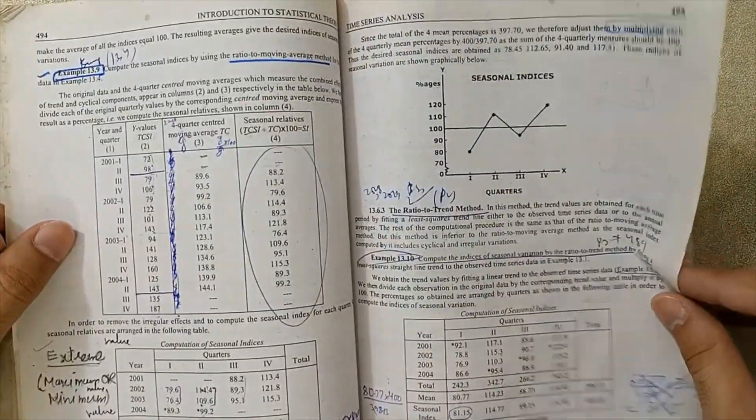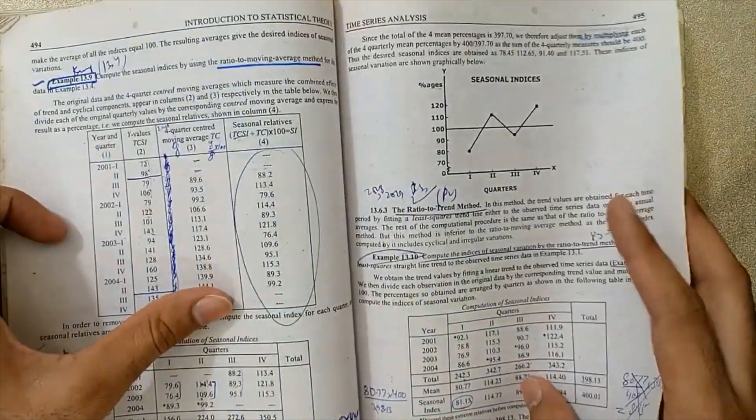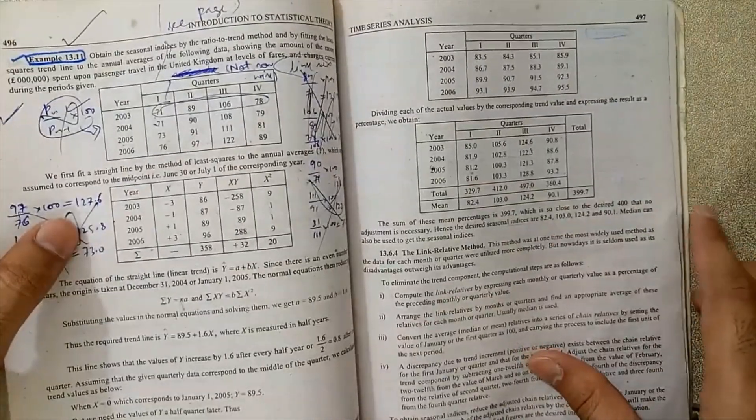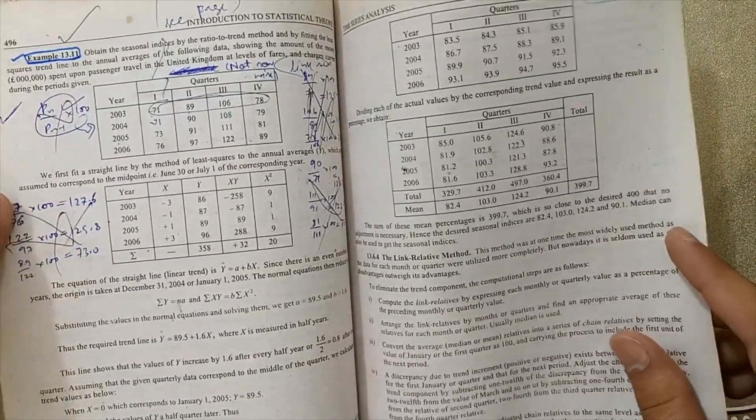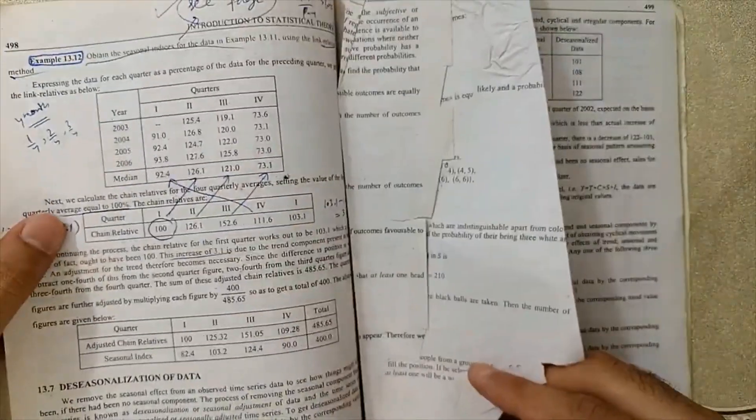Example 13.9 is very important. Ratio to trend method is very important. Ratio to moving average method is very important. Example 13.11 is also important. Just now move to our next example, Example 13.12.